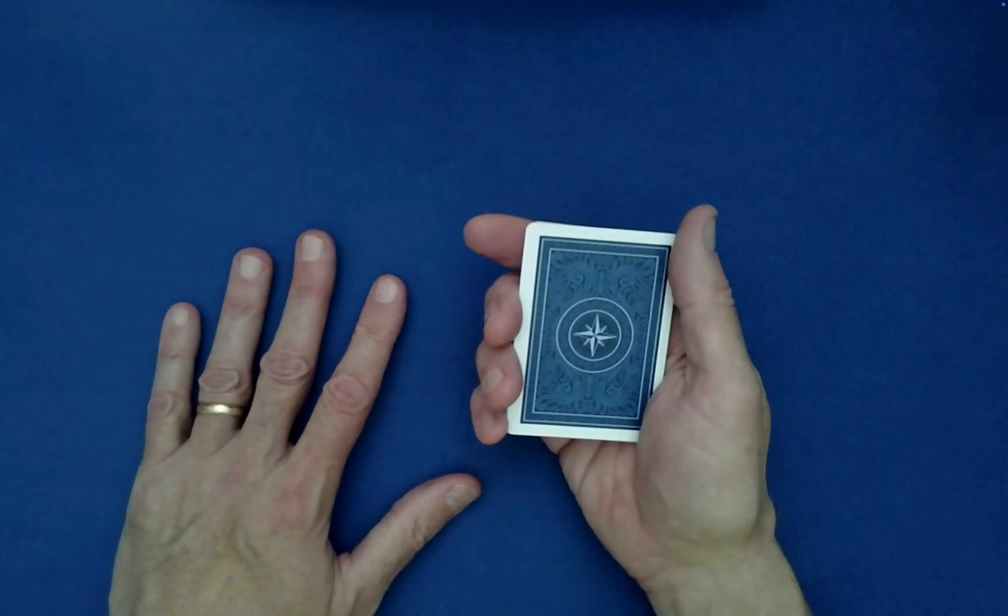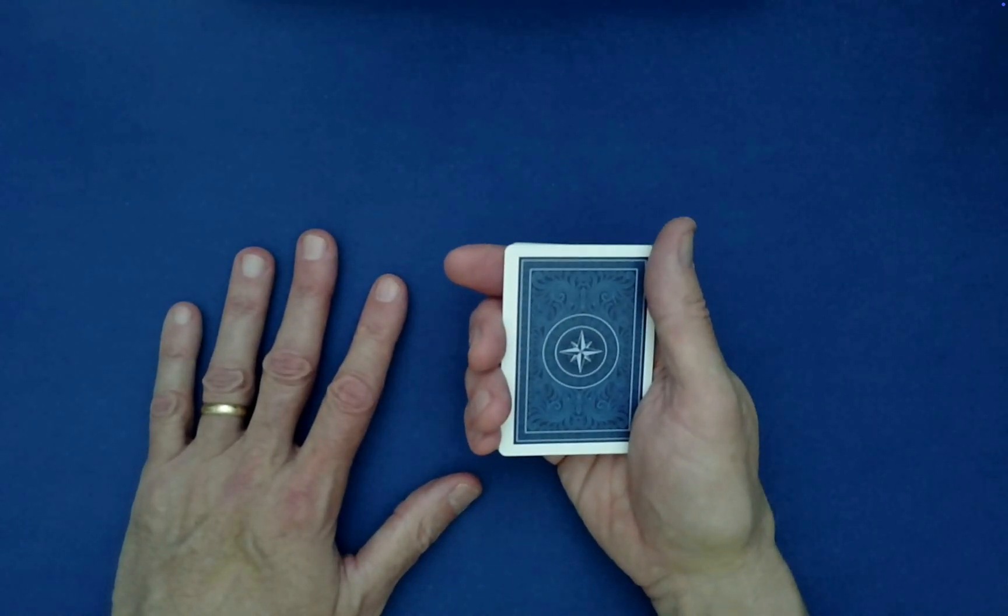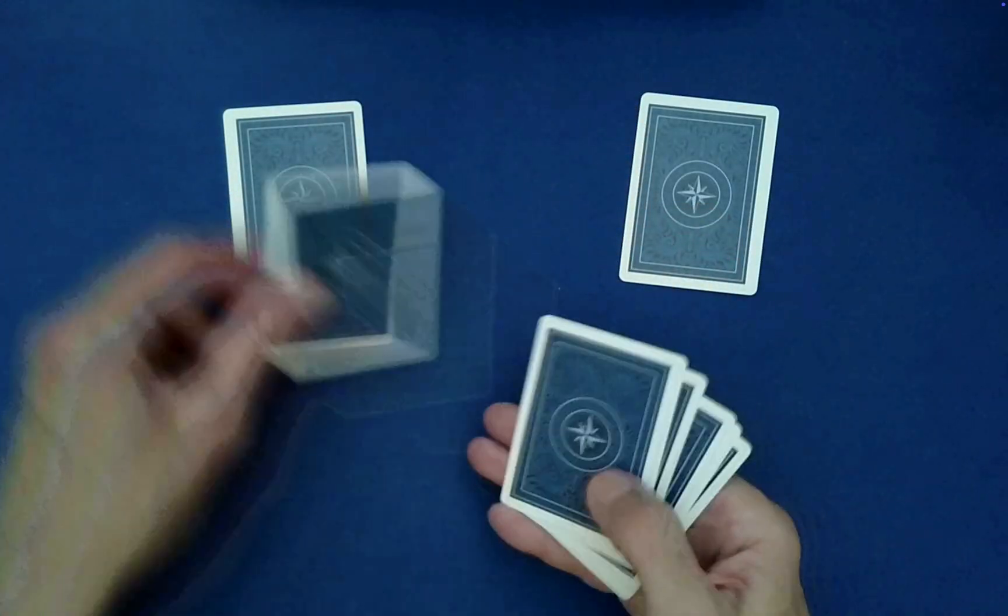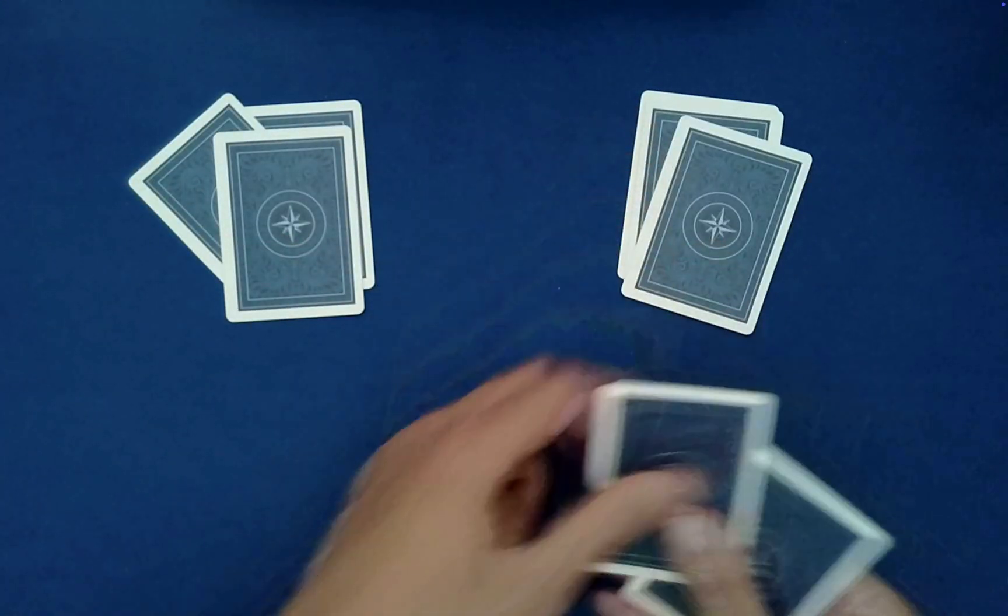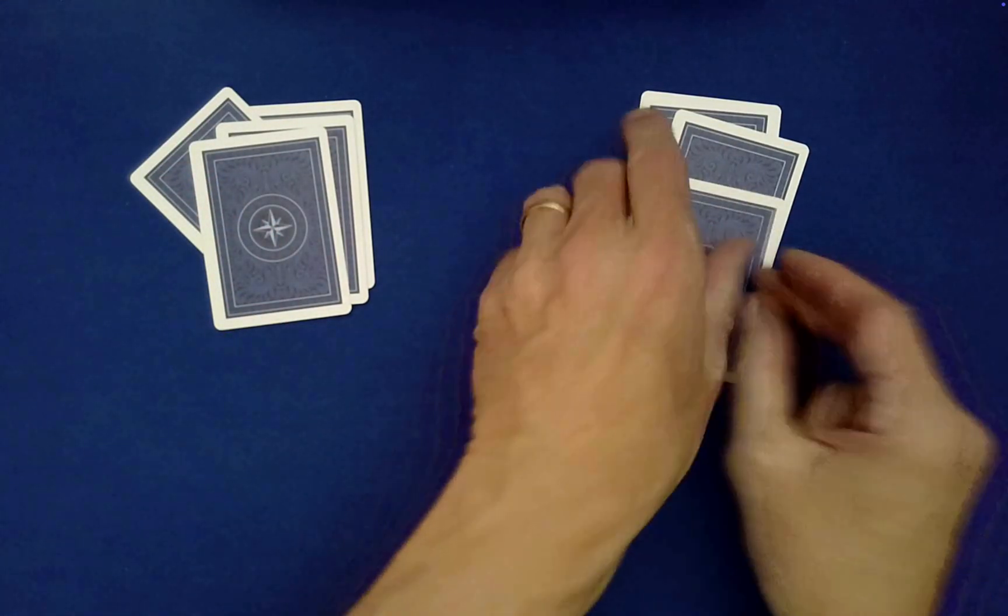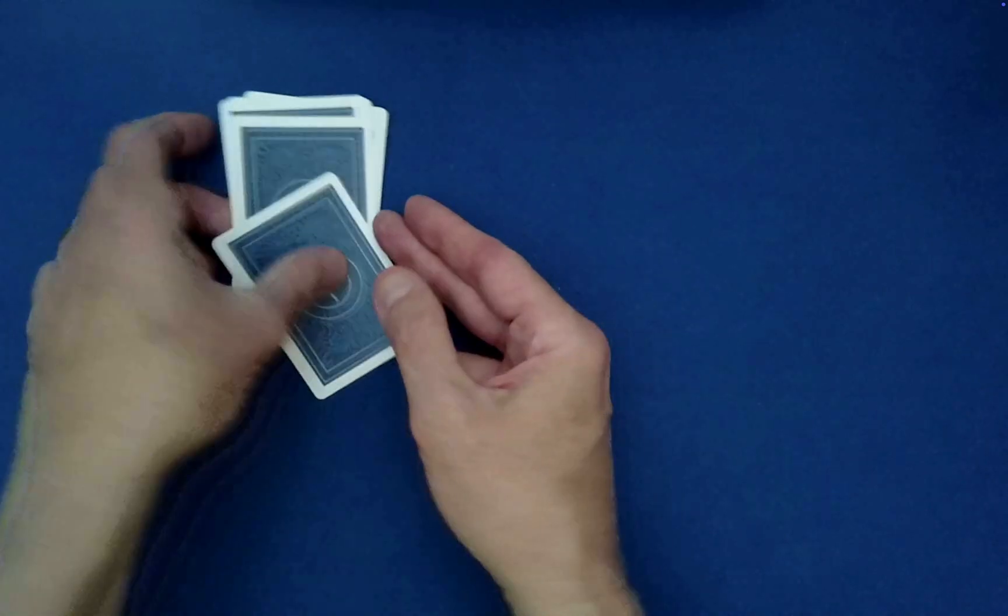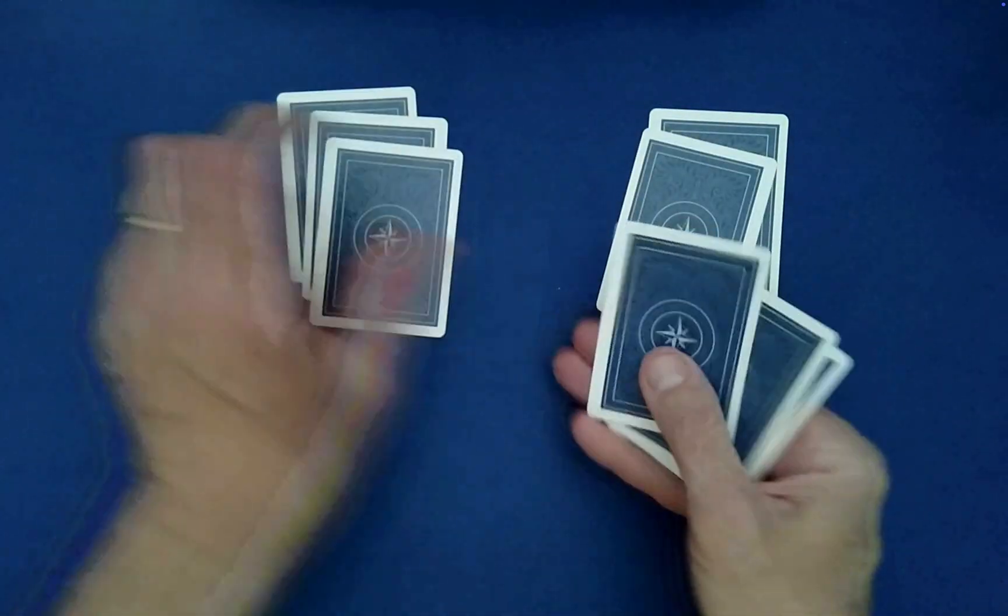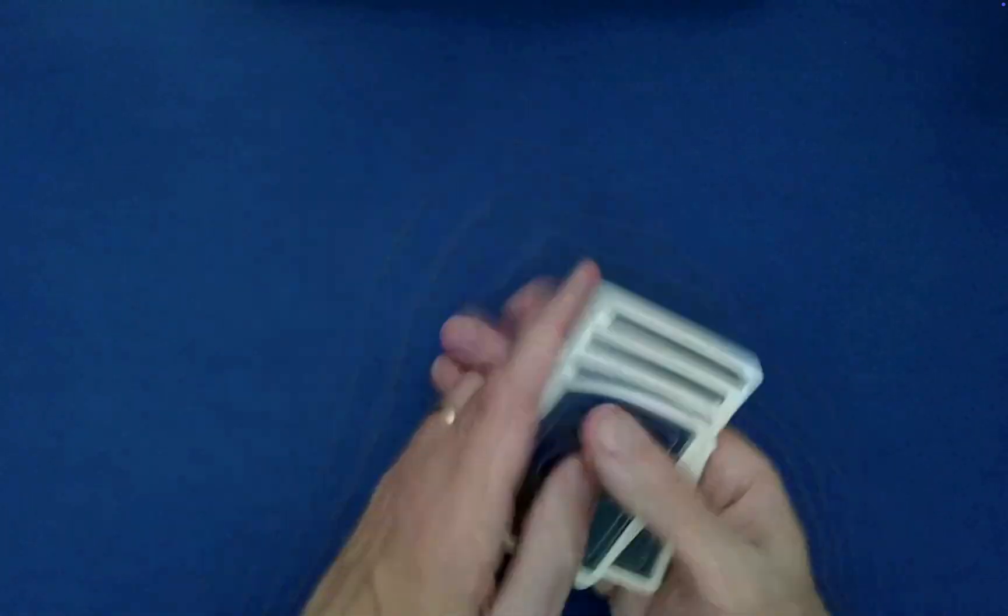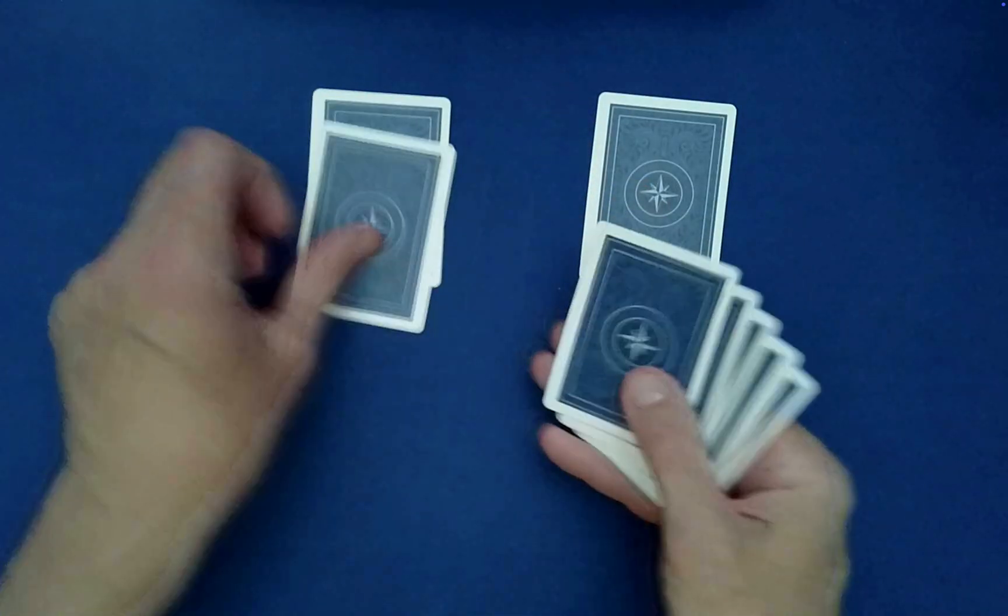And then from here, we can go ahead and have the spectator mix the cards to their heart's content. So we're going to go ahead and just deal out the cards into two piles with random stacking decided by them. Maybe they want right on left. That's fine. Pick those up again. Maybe they want right on left again. Now you can actually have them do all of this dealing, as long as they don't drop the cards everywhere.